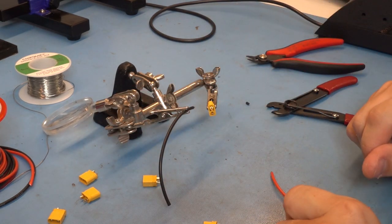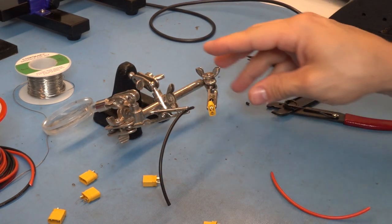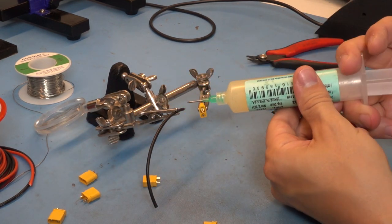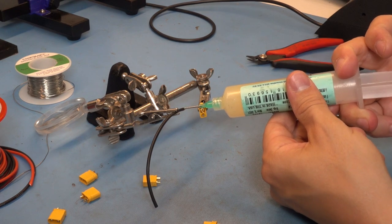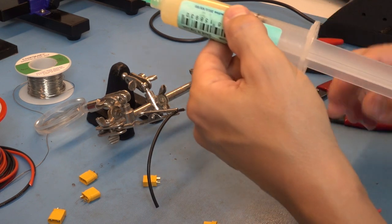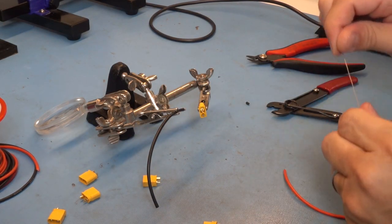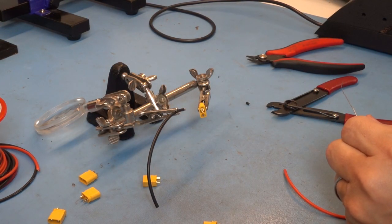Now to start, you don't put them together. First you tin both the wire and the connector. For the wire, I put a little bit of flux on the end of the wire.